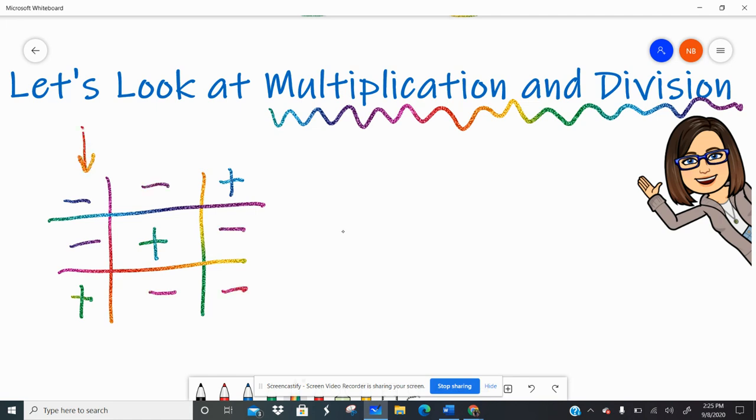So the first column would be your first integer, second would be your second integer, and the last one would be your answer. And it works left to right, right to left, or diagonally.